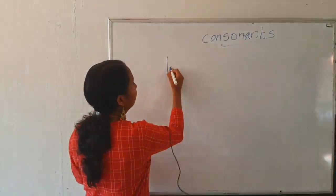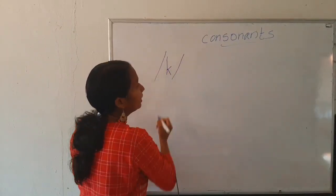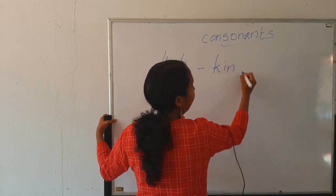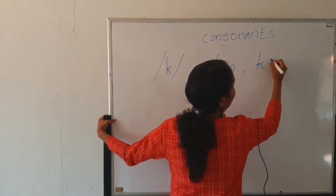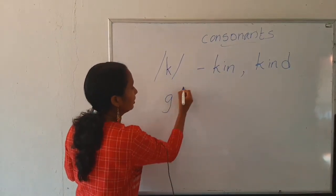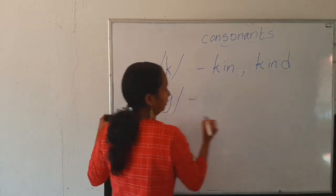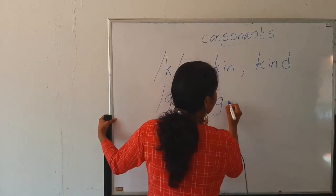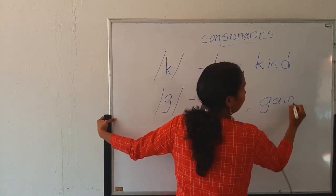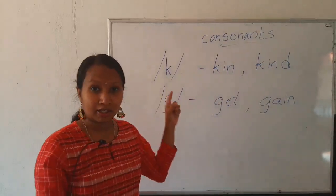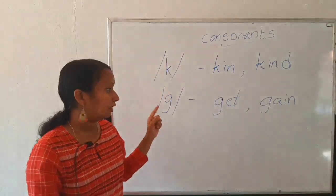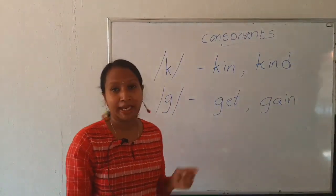One is K sound. K sound. K as in kin, kind, kind. Next one is G sound as in get, gain. K, G. As in kin, kind. G as in get, gain.